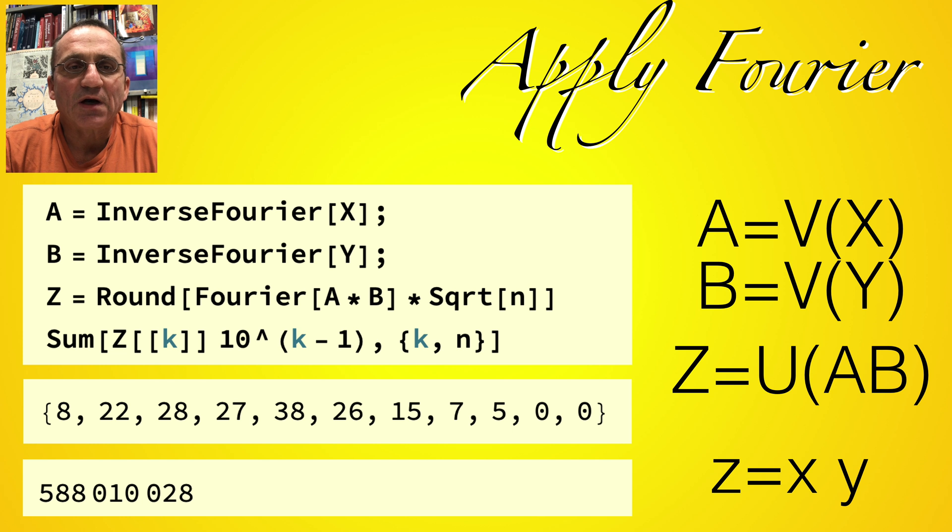And now we can take the Fourier, the inverse Fourier transform of this, this is called A, this is the vector again, B, and then we can take the Fourier transform to get back Z, and Z is now a vector which contains the product, in this case 588,010,028, that's the product of the two numbers. And it has used only these matrices U and V.